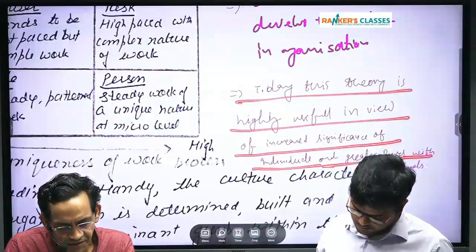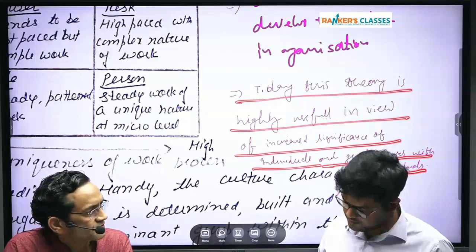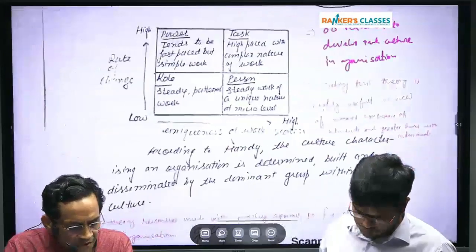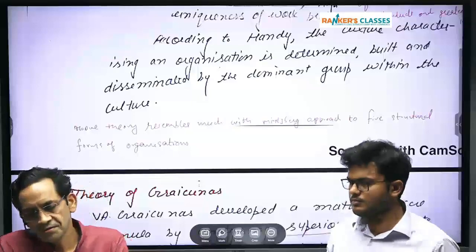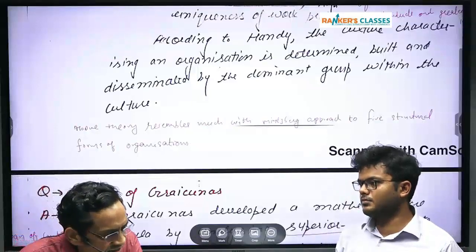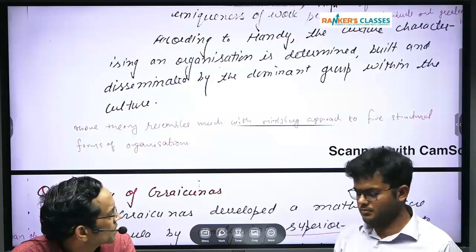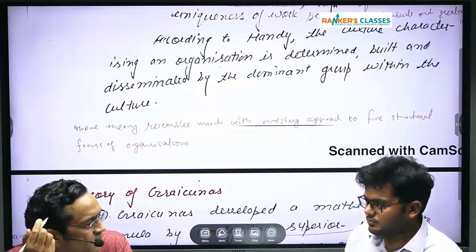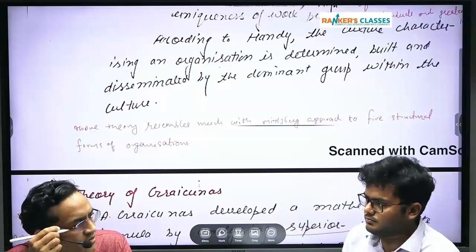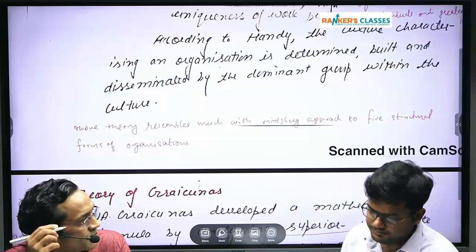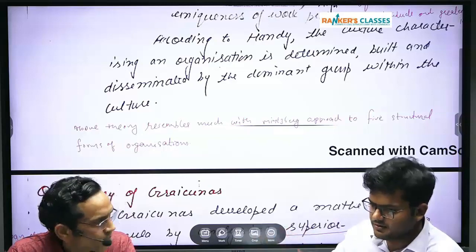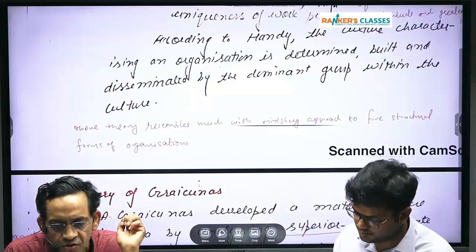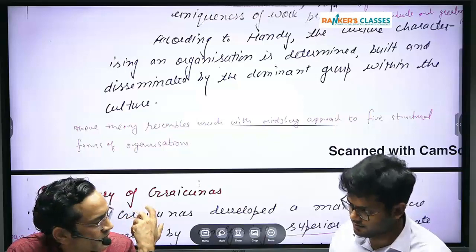Today this theory is highly useful in view of the increased significance of individuals and greater power with individuals — so person culture and power culture find importance. In every organization you will find a mix of all four cultures. We can't say a particular organization will have only one culture. For example, at Medanta Medicity, the person is powerful as well as role-driven.